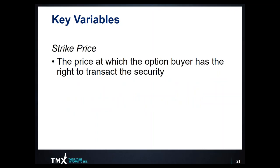Let's take a look at the different characteristics of an options contract. There are two really important characteristics to consider when purchasing or selling a contract to meet your objectives. The first is the strike price, which by definition is the price at which the option buyer has the right to transact the security and the price at which the option writer has the obligation to transact the security.